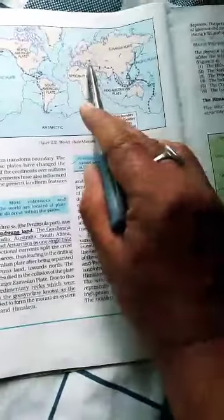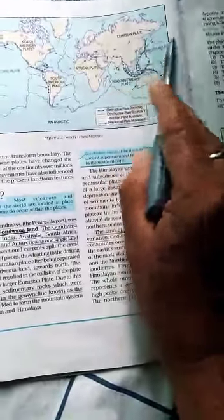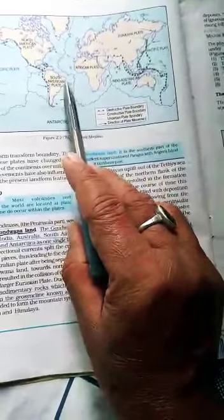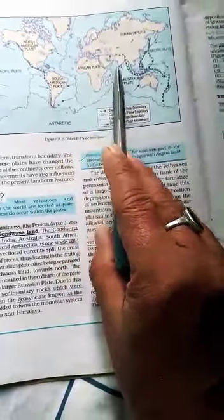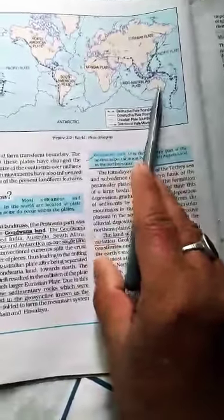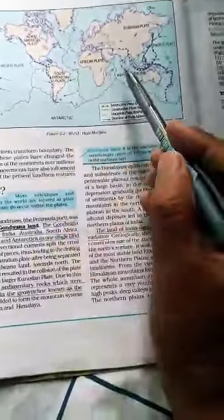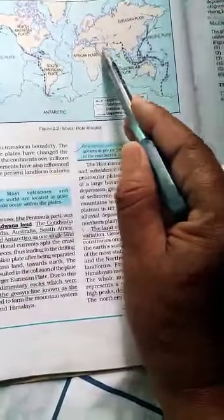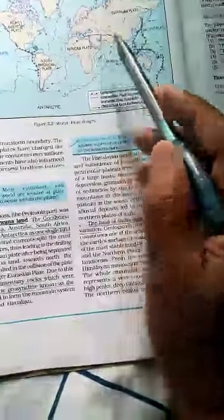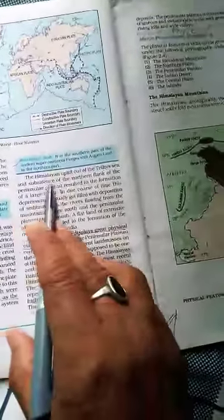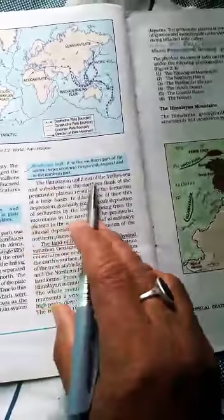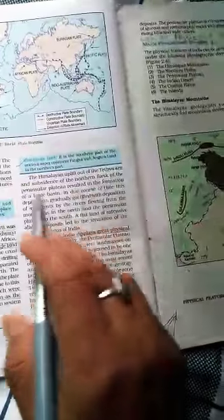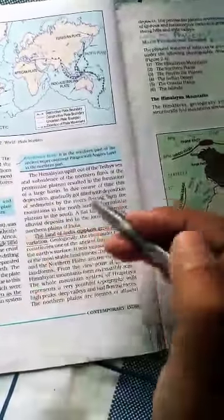Between them, sedimentary rocks accumulated in the geosyncline known as the Tethys Sea, between the northern Angara land and southern Gondwana. Due to compression and pressure, the uplift of the peninsular plateau was formed due to pressure from the Angara land.